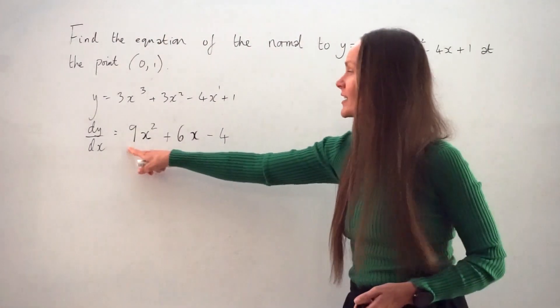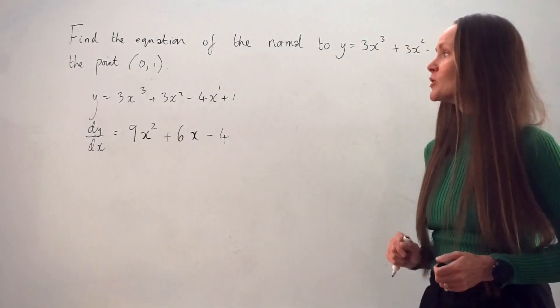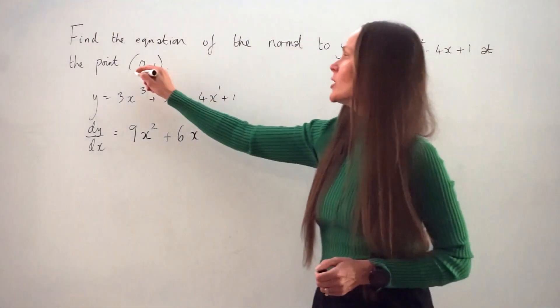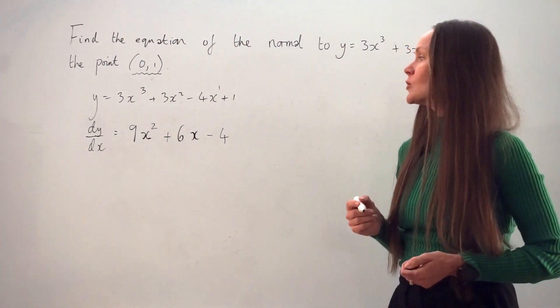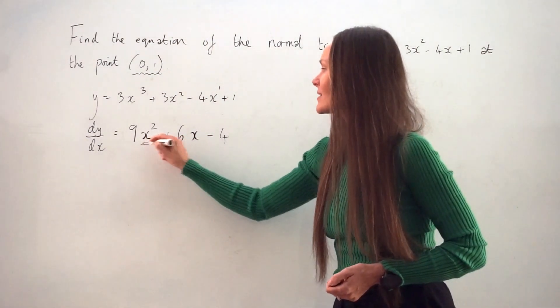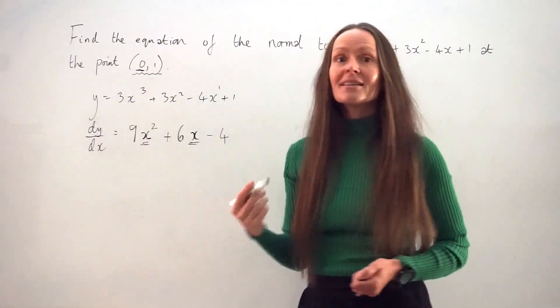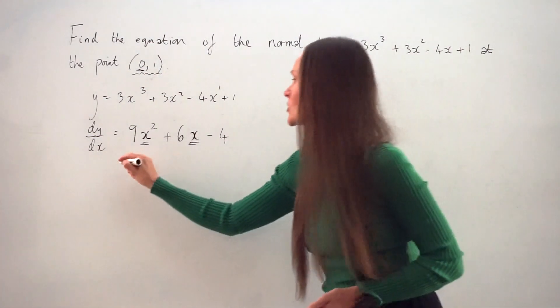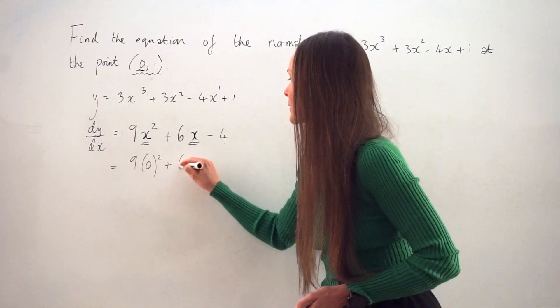So this is an expression for the gradient of the curve at any point, except we do have a point. We know that the gradient is at this point here, (0,1). So what we can do is replace the x value in this expression with the x-coordinate here, 0. So I'm just going to substitute in 0 in place of x, and then calculate.